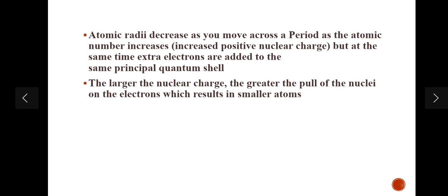There is no shielding and no extra shells being added, so as the atomic number increases, the nuclear charge also increases, and it will have a greater nuclear attraction for the outer electrons, which results in smaller atoms. This is why the atomic radii decrease as you move across the period.